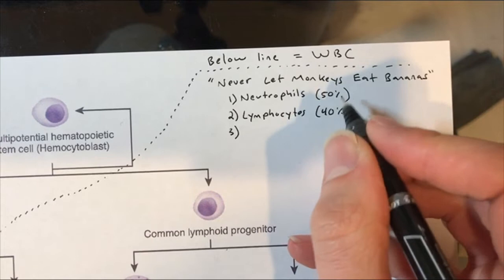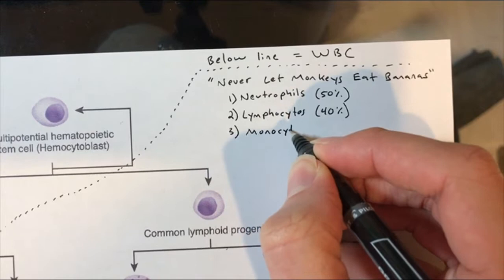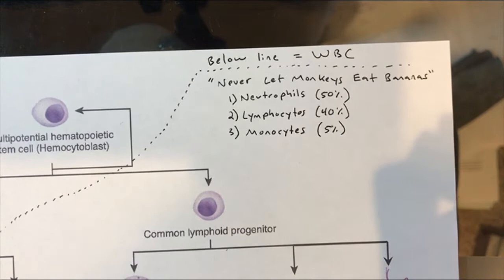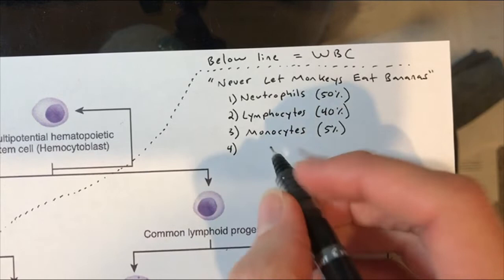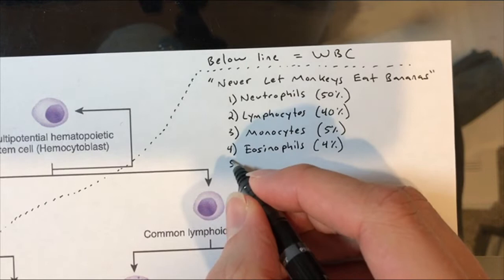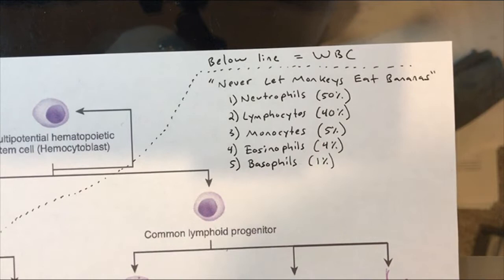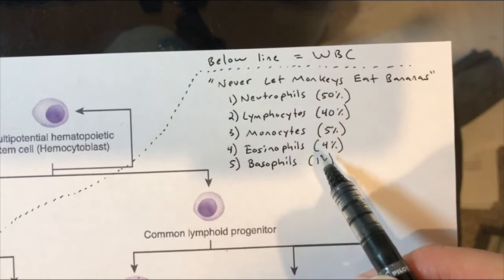The third most common, though 50% and 40% are so dominant that everything else is very small relative to those in terms of population. The next most prevalent anyway is the monocytes group — they represent about 5% of your white blood cells. Then we have eosinophils, at about 4%. And lastly, basophils, at something like 1% of the white blood cells.